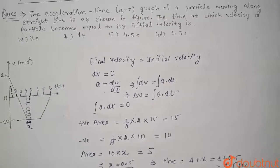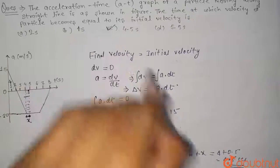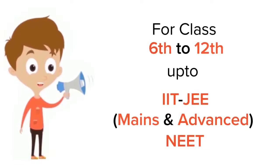So at time is equal to 4.5 second, the final velocity or the velocity at that time will be equal to its initial velocity. So correct option is option c.